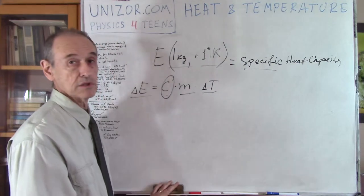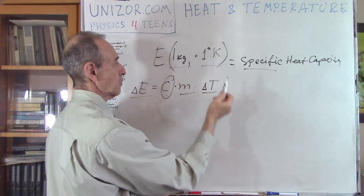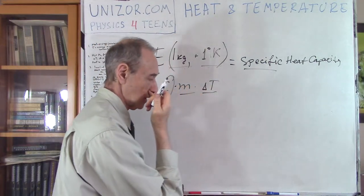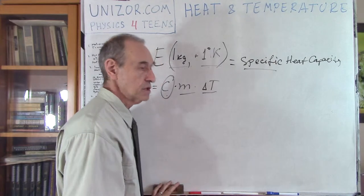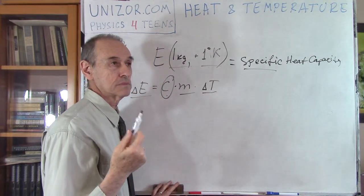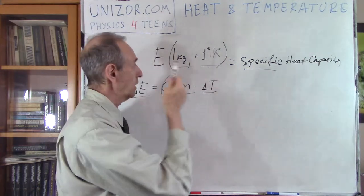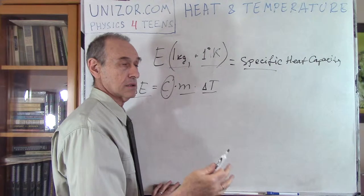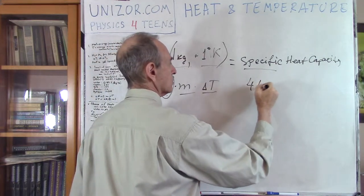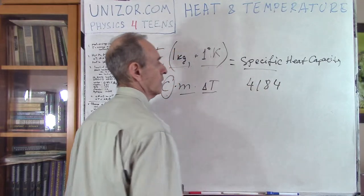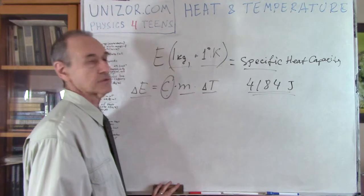We already know that one kilogram of water, if you want to increase it by one degree Kelvin, you need 1000 calories — because it's a kilogram, not a gram. A gram is one calorie, so a kilogram is 1000 calories. And we know that this equals 4184 joules. So, this is the specific heat capacity of water.